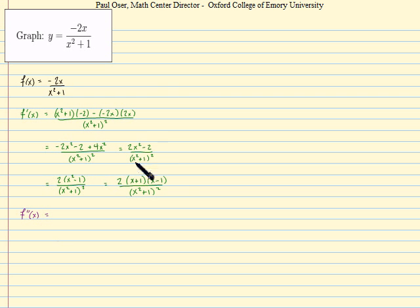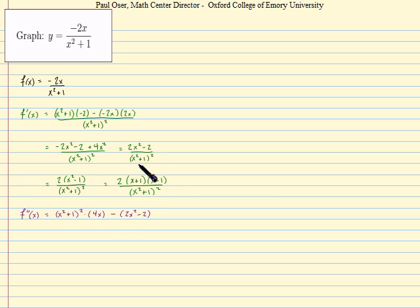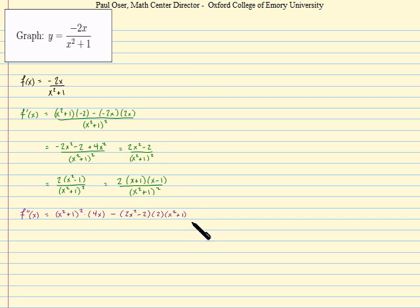Applying the quotient rule to this expression, we find the derivative is the bottom guy times the derivative of the top guy — which here would be 4x — minus the top guy times the derivative of the bottom guy. Notice that's a composition, so the chain rule applies: we bring the 2 down to the front, drop the exponent by 1, and then multiply by the derivative of the inside, which would be 2x. All of this is over the bottom guy squared.